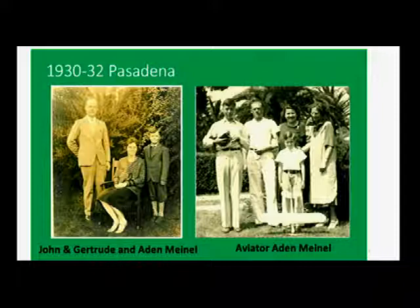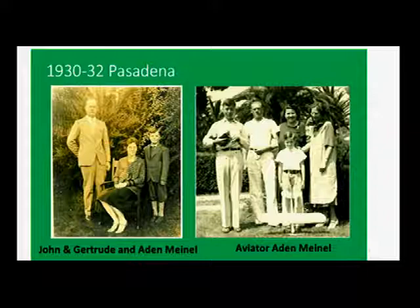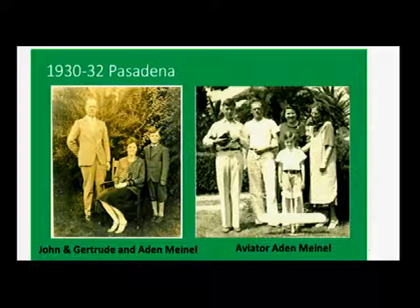This is him. On the left you see John and Gertrude, his mother and father, and that's Aidan standing next to them — I figure this must be sometime between 1930 and 1932. On the right, that's Aidan's stepbrother on the far left with the chicken. His parents are on the outside, and that's Aidan in the middle there, probably seven or eight years old, with the airplane that he built.